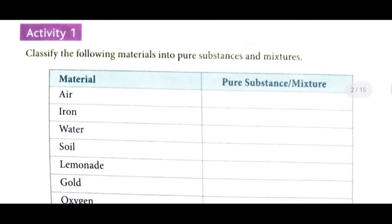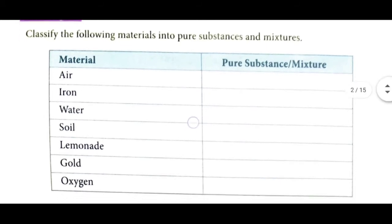Now here is an activity: classify the following materials into pure substance and mixture. Air — humidity kabhi zhaadha hootay hain, kabhi kum hootay hain, pollution bhi alag alag hota hai, is liye air is a mixture. Iron is a pure substance. Water is a pure substance. Soil is a mixture — kyonki sabhi sthano ka soil ek jaysa nahi hootay hain. Lemonade — ye eek mixture hai, kyonki kuch log ke lemonade mein sugar ki matra aur neembu ki matra kum zhaadha hootay hain — the components do not have a fixed ratio. Gold is a pure substance. Oxygen is also a pure substance.